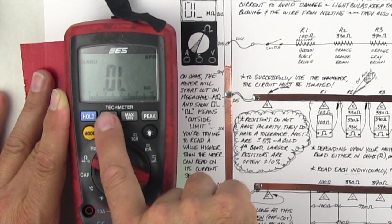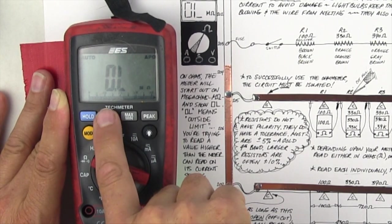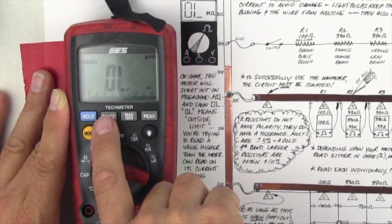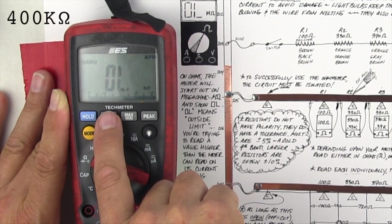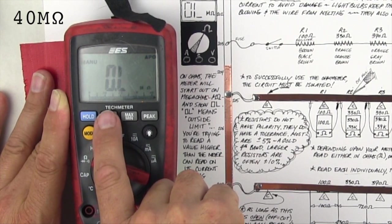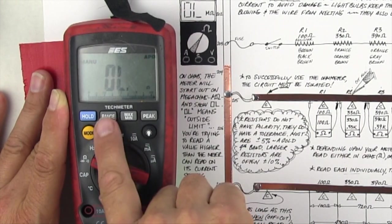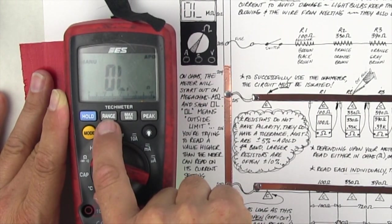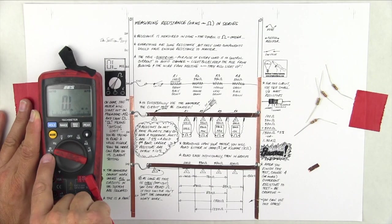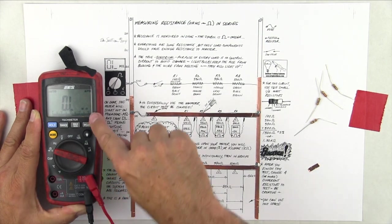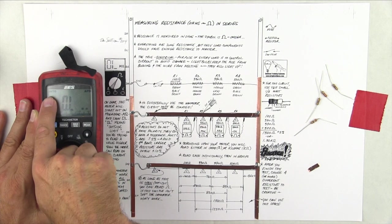You can go to range, and that's manual. What that's doing is going from 400 ohms, 4 kilo ohms, 40 kilo ohms, 400 kilo ohms, 4 mega ohms, 40 mega ohms, and then back to 400. So the meter is cycling around through the ranges. To go back to auto, you hold the range button for two seconds.